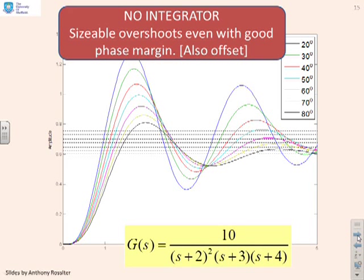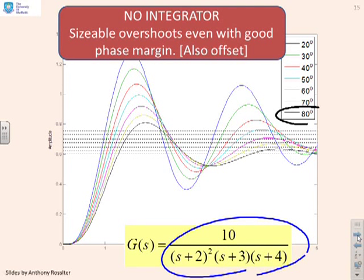Here's another example with no integrator. This one is a fourth-order system, and you see the same sort of insights. With an 80-degree phase margin, which sounds quite good, I've got this black plot. Look how oscillatory it is and how much overshoot you've got—really quite substantial.